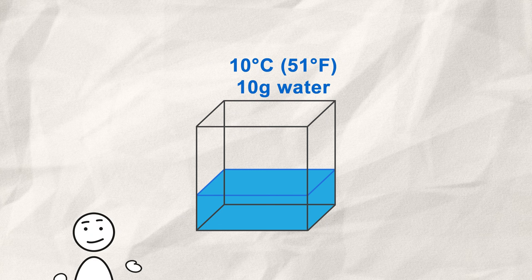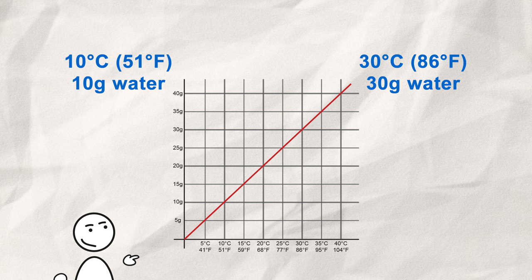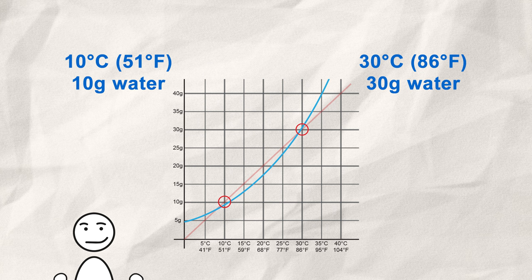I say roughly because the amount isn't linear corresponding to the temperature. The real curve should look like this, but 30 grams and 10 grams makes it easier to follow. So for the remaining video, I'll drop the roughly.